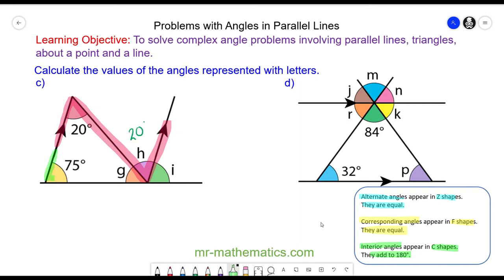Angle I and the 75 degrees are corresponding because they lie within an F. So angle I is 75 degrees. And we can work out angle G using angles on a straight line, which is 180 minus the 20 minus the 75. So angle G will be 85 degrees. And we can check this because G plus 75 plus 20 will equal 180. We know G is 85, and 85 plus 75 plus 20 does make 180 degrees, which is angles in a triangle.